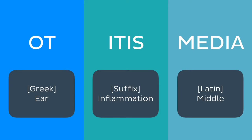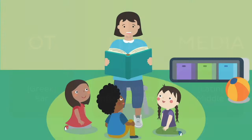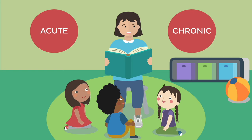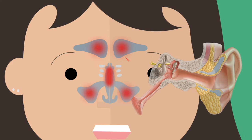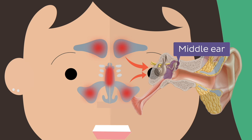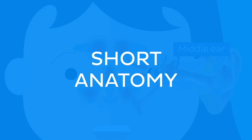Otitis media is one of the most common diseases in children. It can be acute, or it can develop into a chronic form. The most frequent version is its acute form, so that's the form we're going to focus on today. Otitis media usually occurs when an inflammatory process spreads from the upper respiratory tract into the middle ear. The answer to how that happens lies in the anatomy of the middle ear, so let's briefly highlight its most important parts.